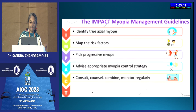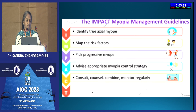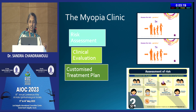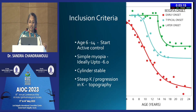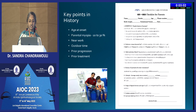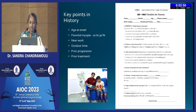The IMPACT myopia management guidelines from LV Prasad state: first identify true axial myopia, as interventions should not be used for pathological, syndromic, or ROP-treated myopia. Map the risk factors, pick out progressive myopes, advise an appropriate myopia control strategy, then counsel, combine, and monitor regularly. The myopia clinic performs risk assessment, clinical evaluation, and provides a customized treatment plan. Include only simple myopes aged 6 to 14 with a stable cylinder. If there is any doubt about the cylinder, always do topography to confirm.